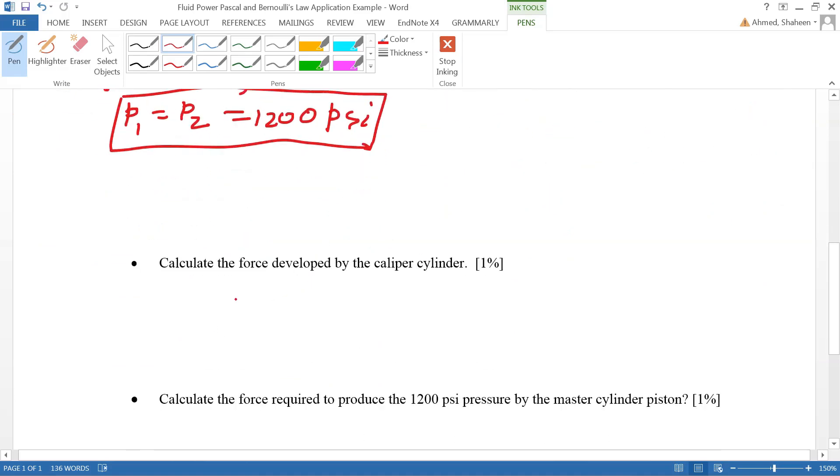The caliper piston has the same psi, the same pressure. Then the force we can calculate: force equals pressure times area. We get 1200 psi, pounds per square inch, times the area which is π/4. It says four inch diameter caliper piston, four squared. If I calculate this, I get about 15,000 pounds force.